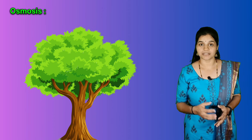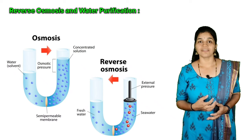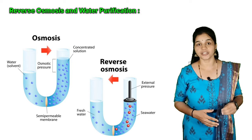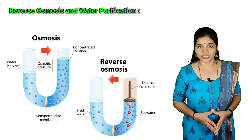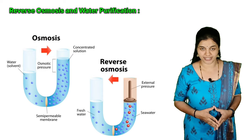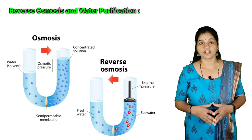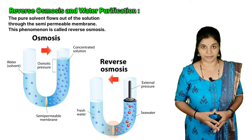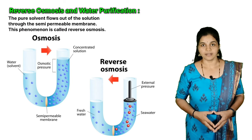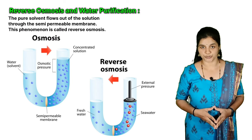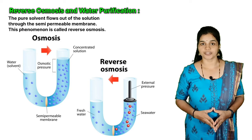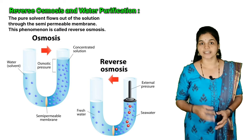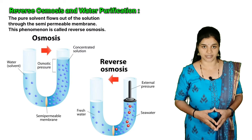Water movement from soil into plant roots and to the upper portions of the plant is also partly due to osmosis. Meat is preserved from bacterial action by adding salt, and fruits are preserved by adding sugar. Through osmosis, bacteria on salted meat or candied fruits lose water, shrivel, and die. We can reverse the direction of osmosis by applying a pressure larger than the osmotic pressure to the solution side — pure solvent then flows out of the solution through the semi-permeable membrane. This phenomenon is called reverse osmosis.